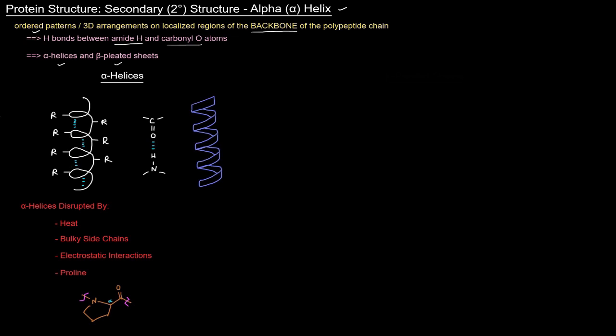Heat is intuitive. Heat disrupts hydrogen bonds, and hydrogen bonds are what hold together the alpha helix. If enough heat is added, those hydrogen bonds can be broken, and the alpha helix can be denatured.